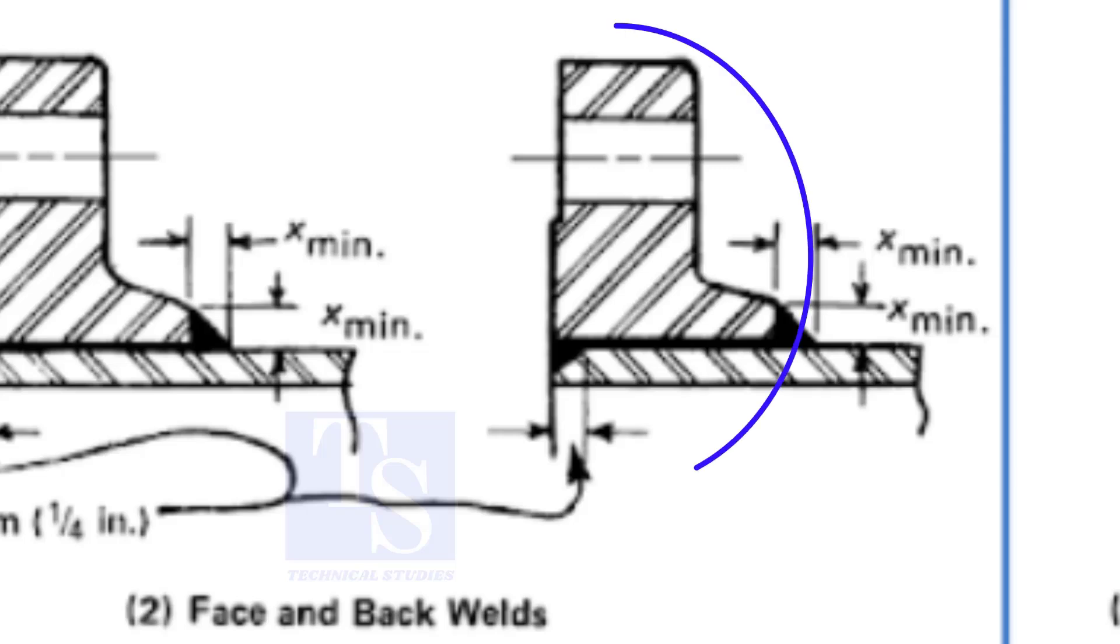In the third method, you can see the face of the pipe and the flange are the same. Here, the end of the pipe is beveled.